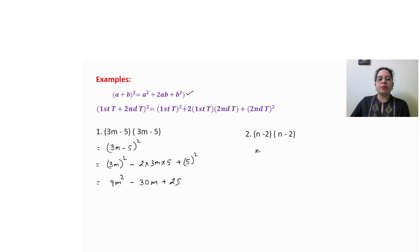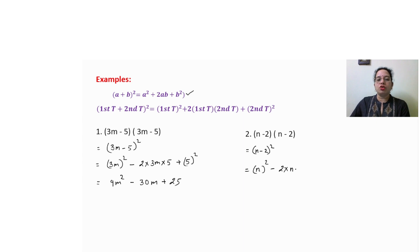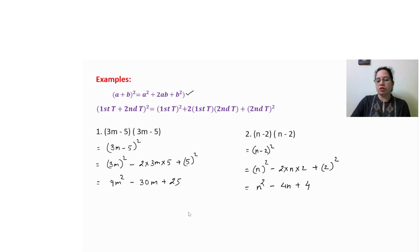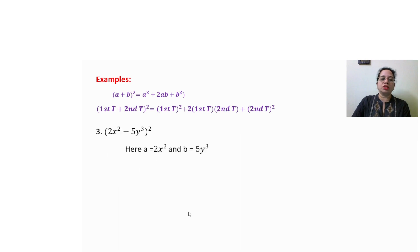For the second sum, (n minus 2) two times means (n minus 2) whole square. Since the minus sign is there, we use the second identity: first term whole square minus 2 into first term into second term plus second term whole square. This gives n square minus 4n plus 4. All three are unlike terms, so this is the answer.